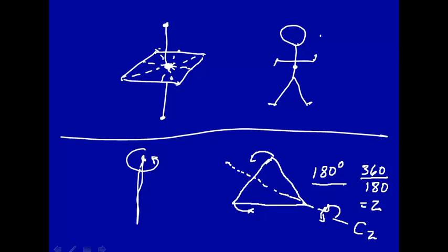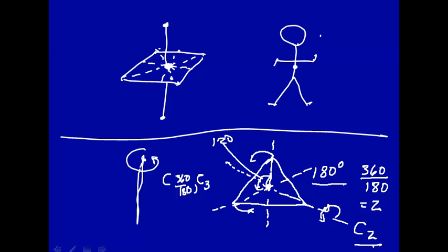An equilateral triangle has a C2 rotational axis here, and here's another one, and a third one — so it has three C2 rotational axes. Then if you look at an axis coming right out toward you, if you rotate around this axis 120 degrees, each vertex moves 120 degrees, and you get the same structure again. So this axis perpendicular to the plane is a C3 axis. An equilateral triangle has four symmetry axes: three C2 axes and one C3 axis.